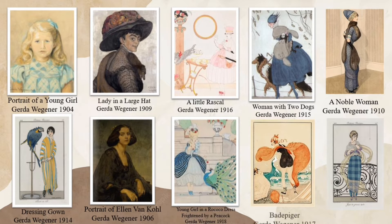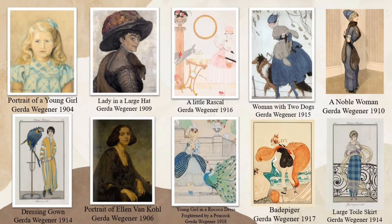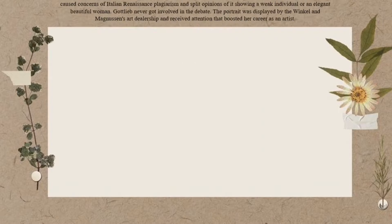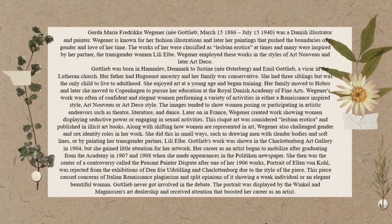'Dressing Gown' (1914), 'Portrait of Ellen Vanco' (1906), 'Young Girl in a Rococo Dress Frightened by a Peacock' (1918), 'Paid Picture' (1917), and 'Large Toile Skirt' (1914). Those are some of her famous artworks.